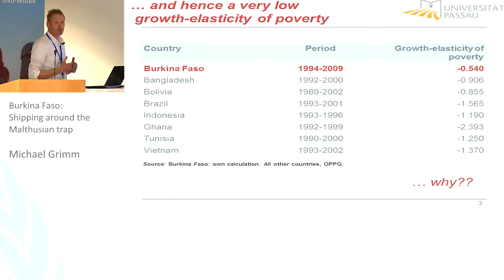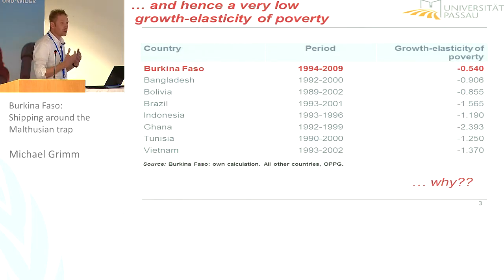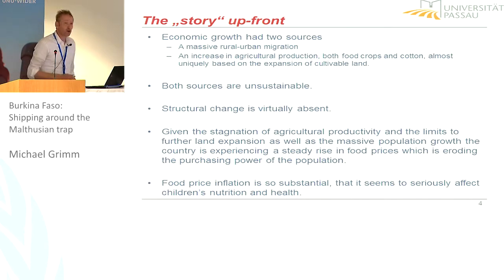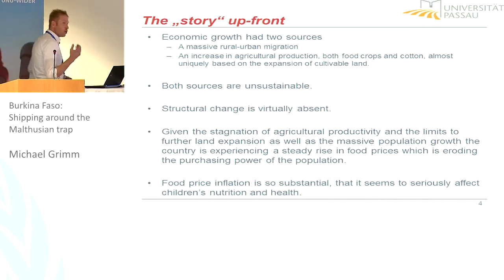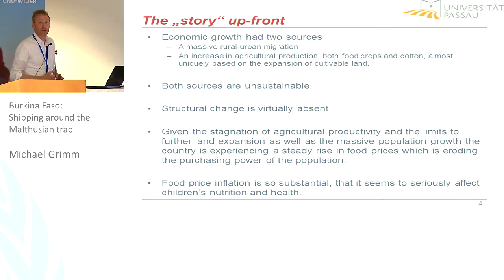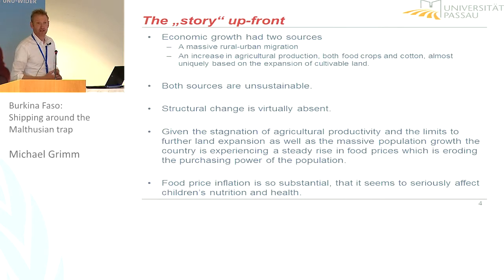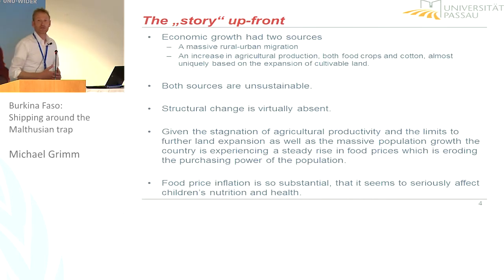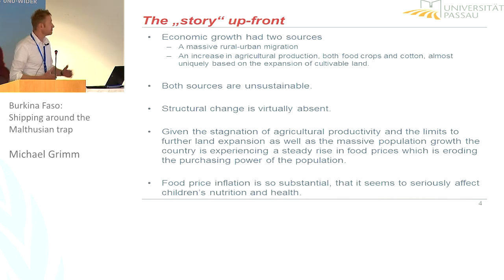What I do now is not so much explain how we computed these poverty figures — if you're interested in that, I invite you to look into the paper — but I try to explain this development we see here. So let me start with the story up front, and then I'll try to provide the empirical evidence. What we argue is that economic growth mainly had two sources. The first is a massive migration from rural areas to urban areas — people leaving the countryside and entering the urban labour force, mainly the informal sector. So it's a compositional effect. The second is agricultural growth, and that's mainly driven by land expansion, not so much by a productivity increase.